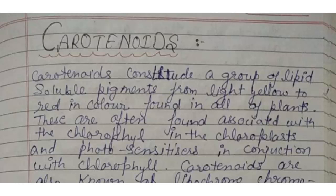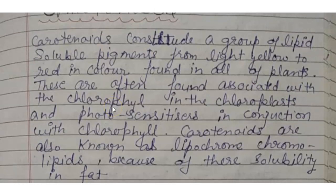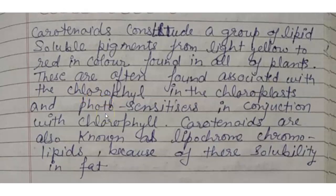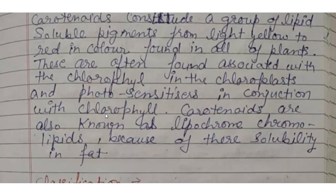Hello everyone, welcome back to my channel. Today's topic is carotenoids, from MSc Chemistry fourth semester natural products. Carotenoids constitute a group of lipid-soluble pigments, light yellow to red in color, found in all plants. They are often found associated with chlorophyll in the chloroplast and act as photosensitizers in conjunction with chlorophyll.